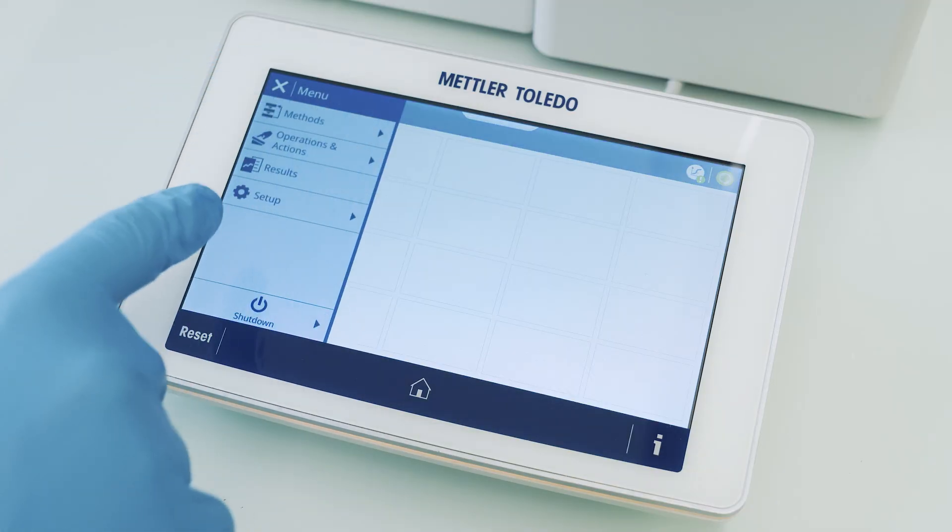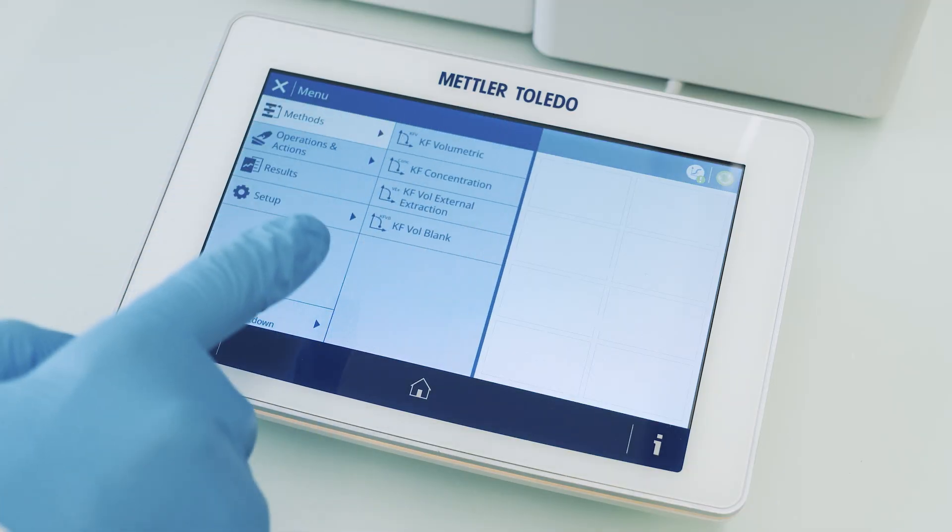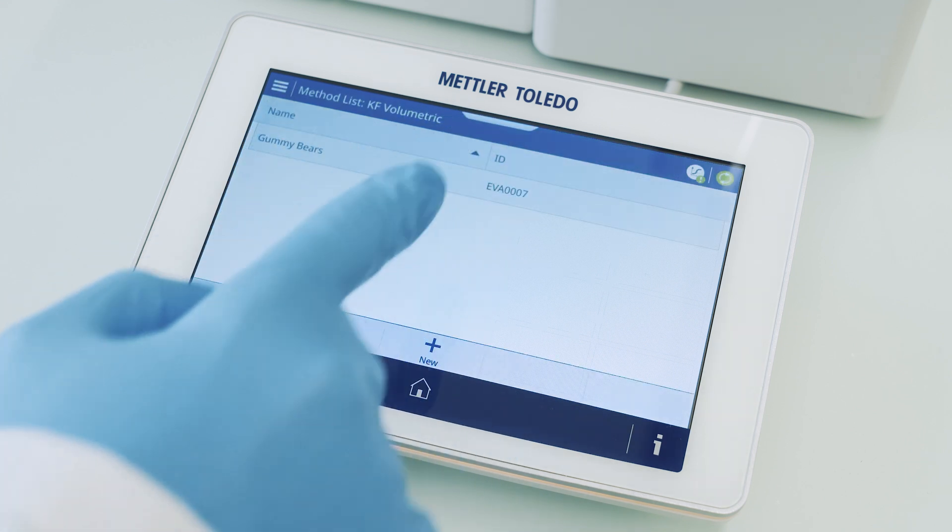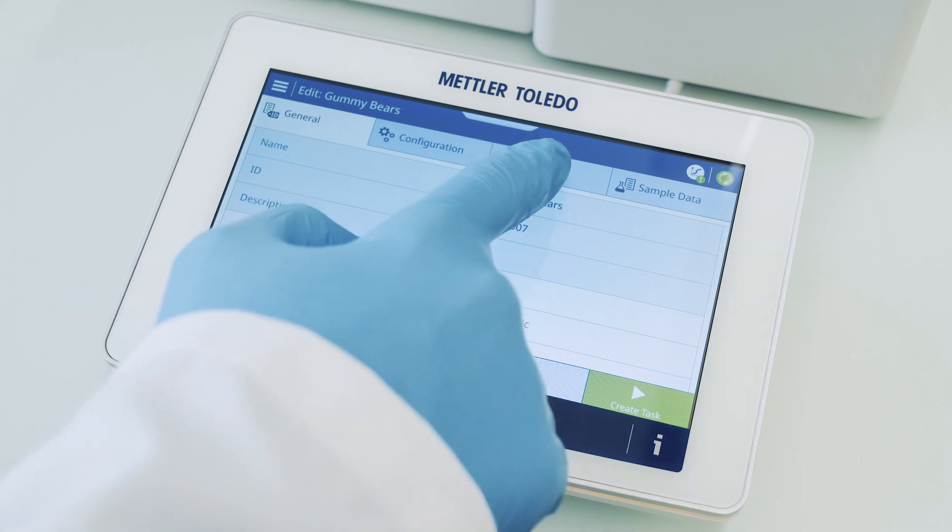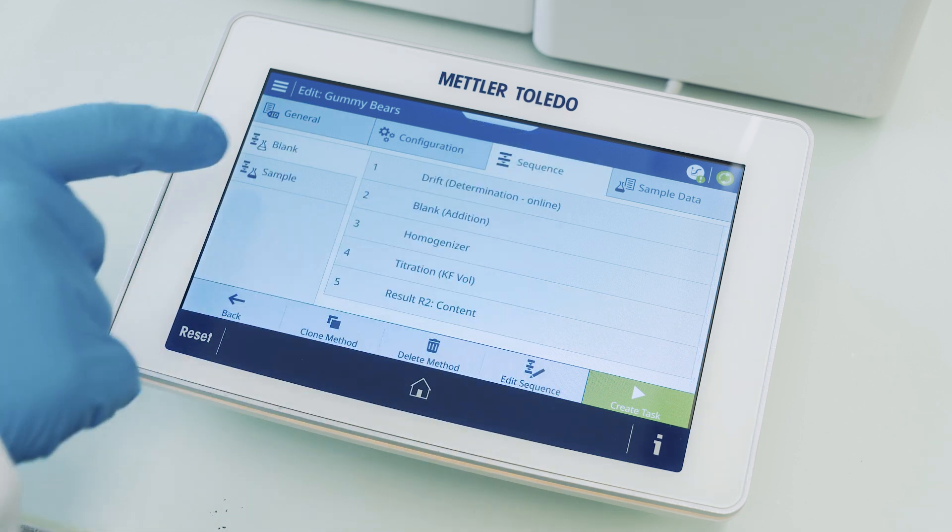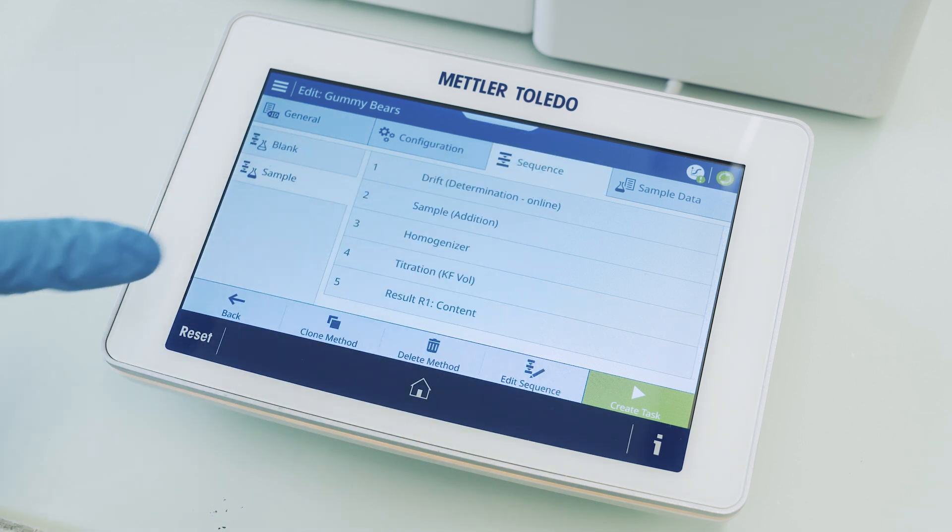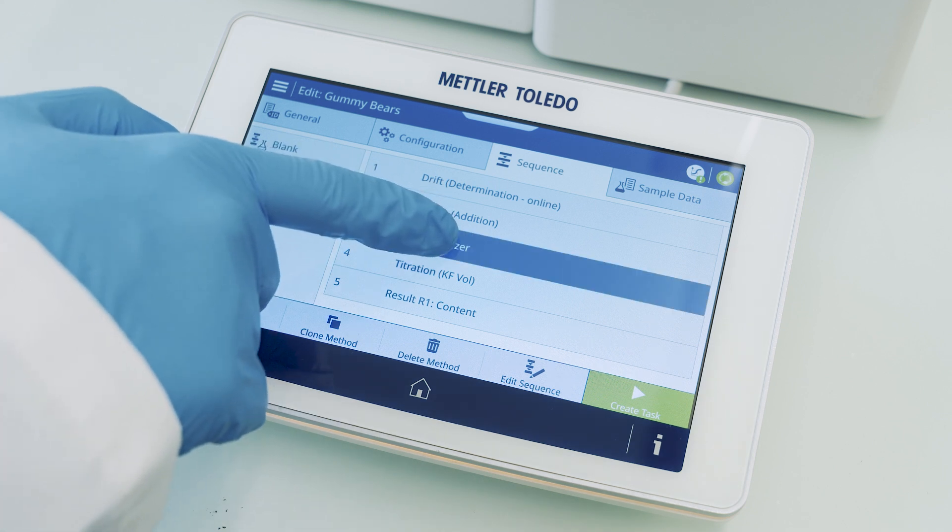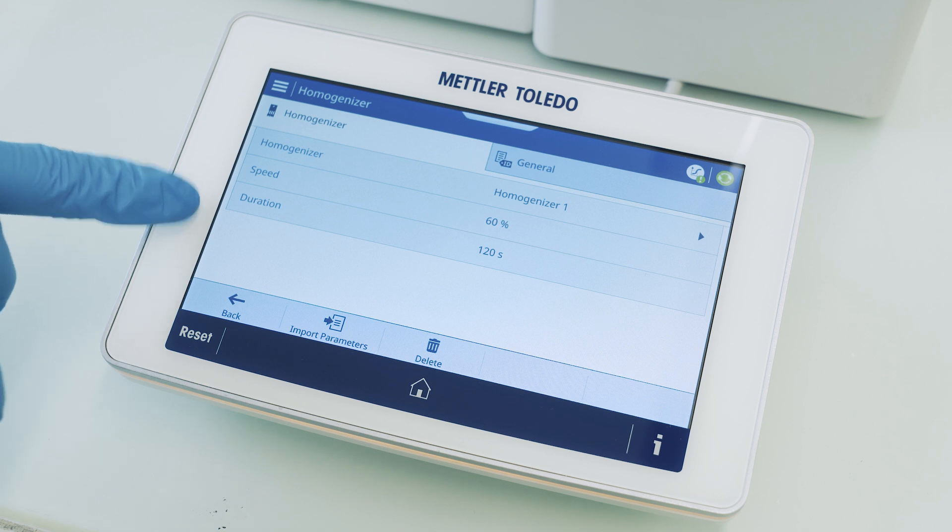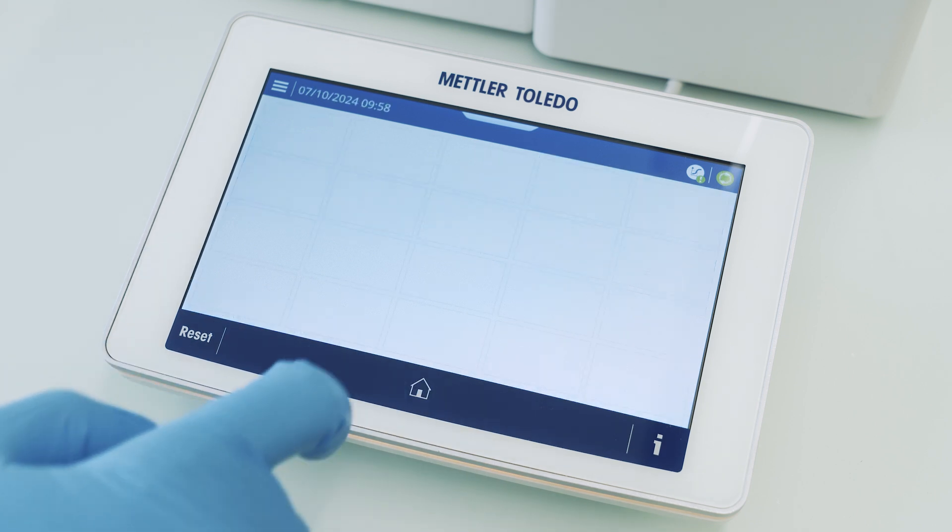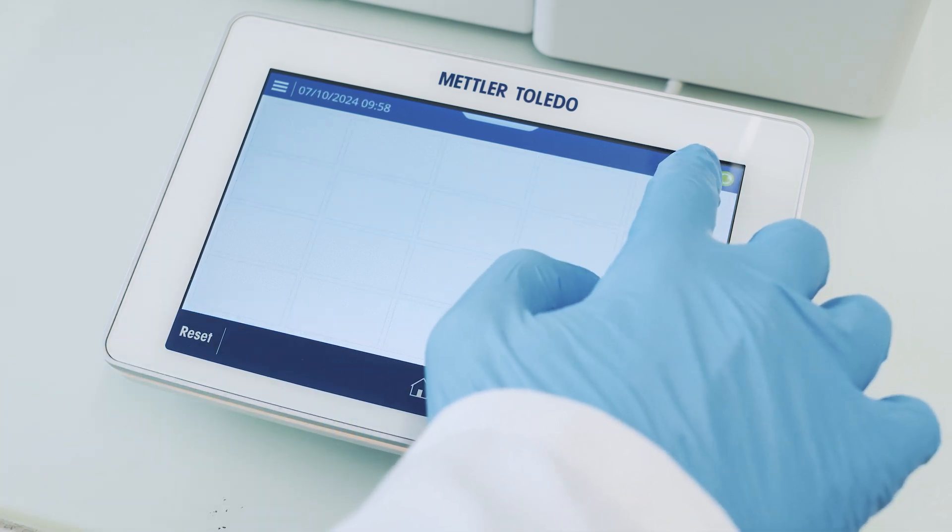If we navigate to the method, we can see in the method sequence there is a method function called homogenizer. In this method function we have a speed and the duration which turns on the homogenizer for this certain amount at this speed.